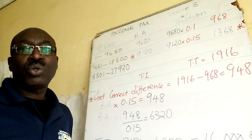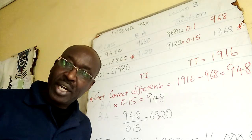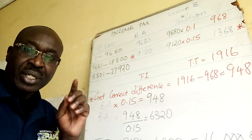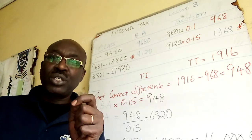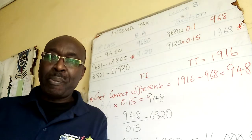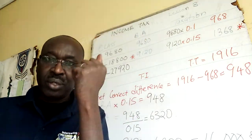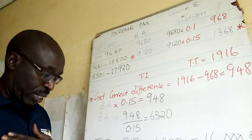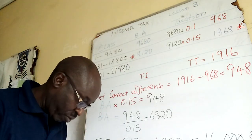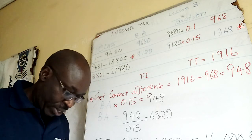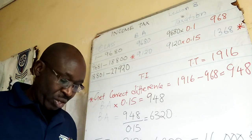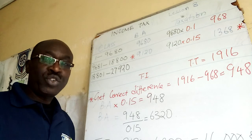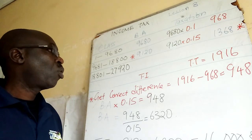Welcome to income tax lesson three. In lesson three we are going to deal with backward taxation. You are given a backward question — asked to find the salary or taxable income — and then you are given the taxable income.